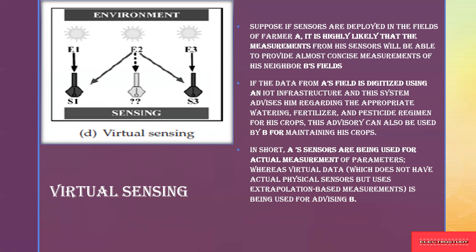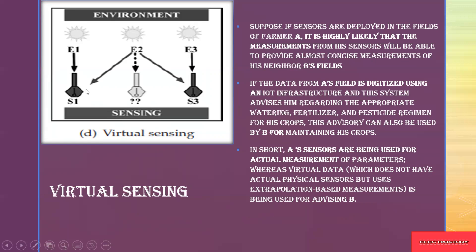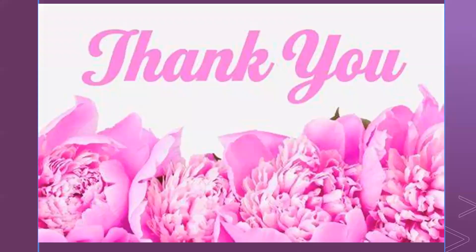The same data from field A can also be used by field B for maintaining crops at the same level. In short, the sensor used in one field for actual measurements of parameters can be used across all other fields based on those actual measurements. This is the virtual sensing method — using measurements from one source to serve multiple other locations.